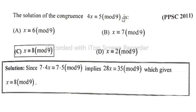Solution: Since 7 is the multiplicative inverse of 4 modulo 9, we multiply both sides by 7. So 7·4x ≡ 7·5 (mod 9), which implies 28x ≡ 35 (mod 9).